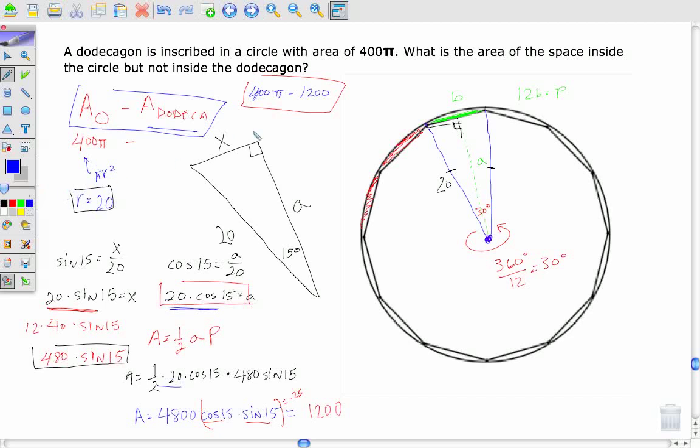And I tend to prefer answers to be in terms of π, so I would take that. But if you were so inclined to figure out exactly what this actually equals, 400π minus 1,200 is equal to 56.637, approximately. That being a rounded answer.